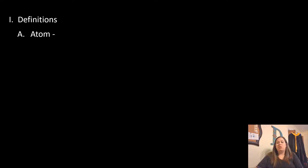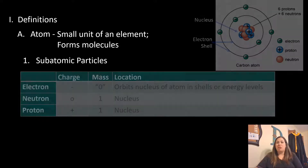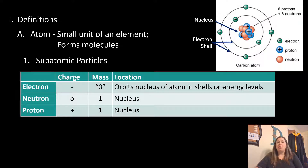Some definitions we need to look at: we need to understand what an atom is. An atom is a small unit of an element, and these atoms are used to form molecules. Atoms are composed of three subatomic particles: electrons, neutrons, and protons.